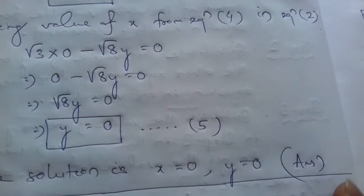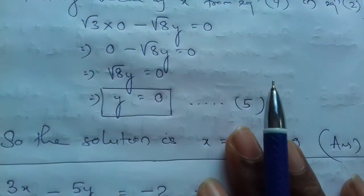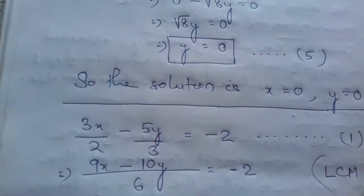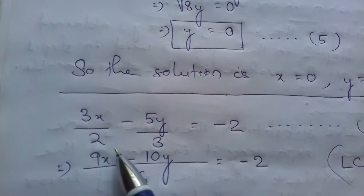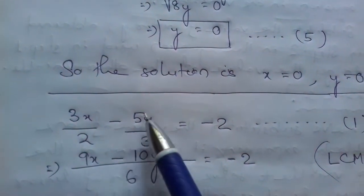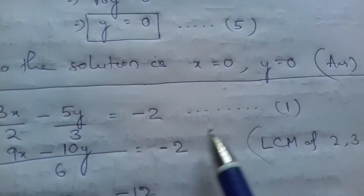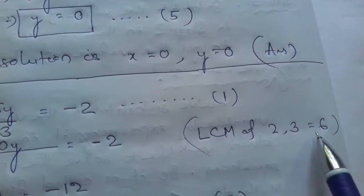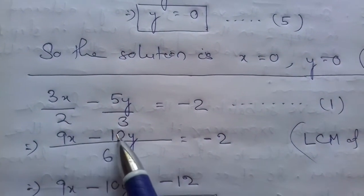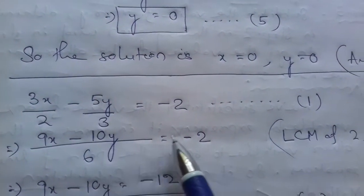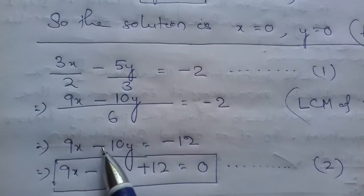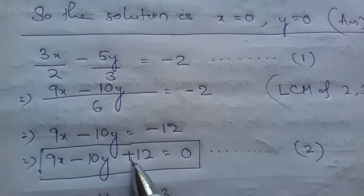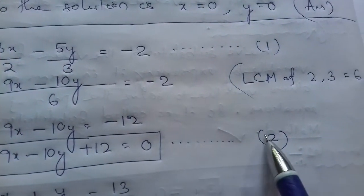Now let's solve another question. The first equation is 3x/2 − 5y/3 = −2. Taking LCM as 6, this becomes 9x − 10y = −12, or 9x − 10y + 12 = 0. This is equation 2.